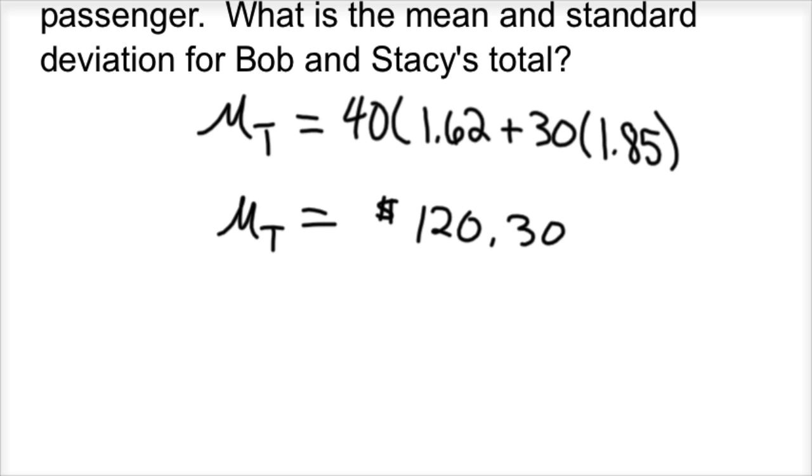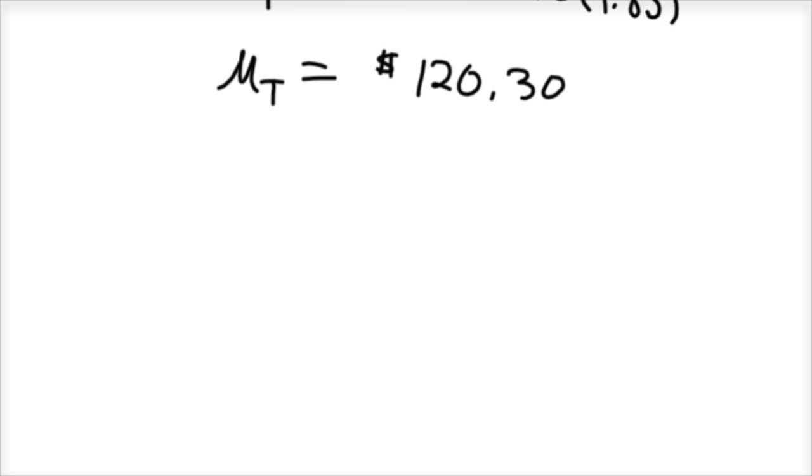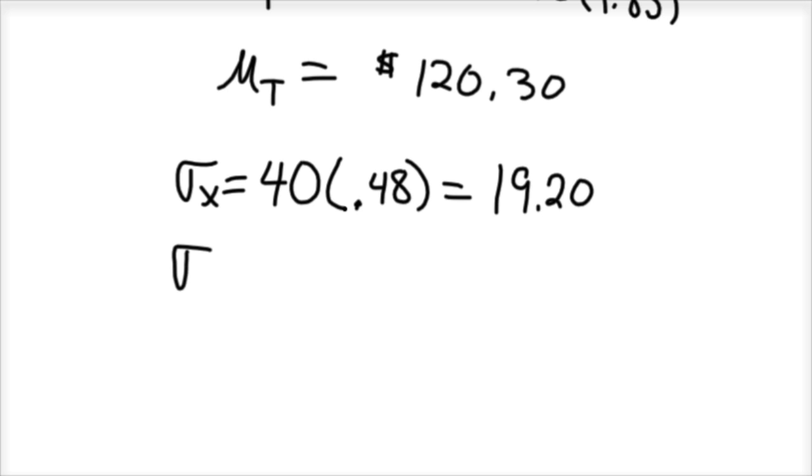Now what about their standard deviation? How much variance is there? The first thing we need to calculate is our variance. Sigma sub X with our new total for Bob, he gets $40 times his standard deviation of 0.48, that's $19.20. For Stacy, she collects $30 with a standard deviation of 0.73, you get $21.90 for her standard deviation.